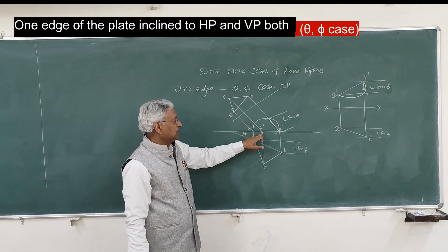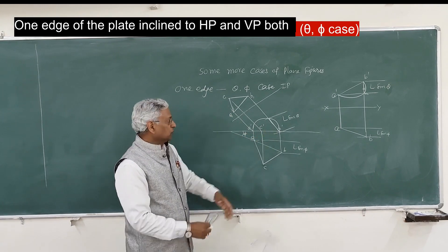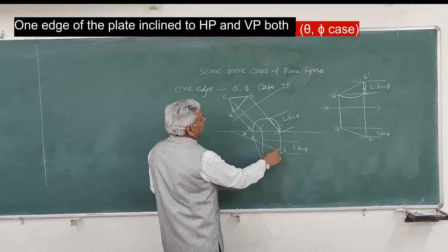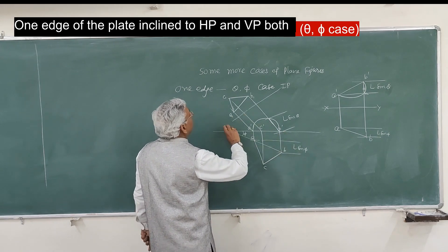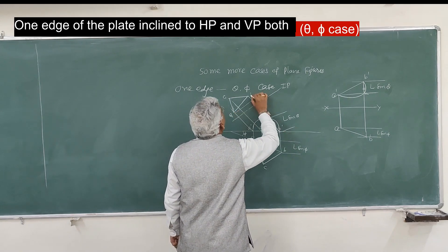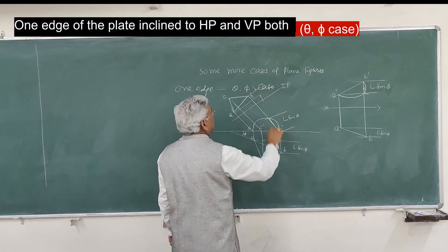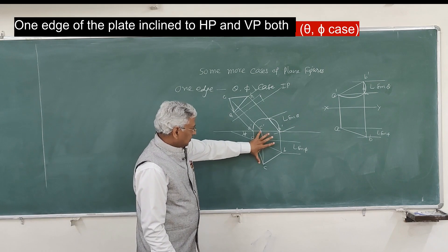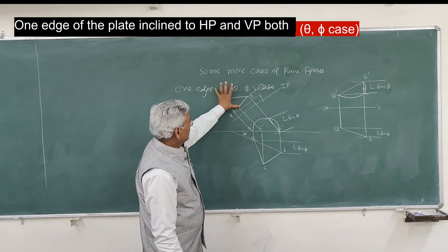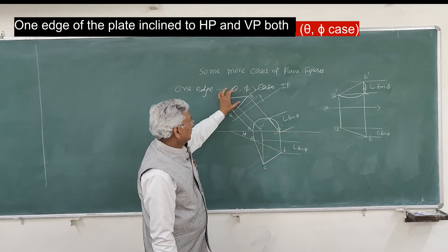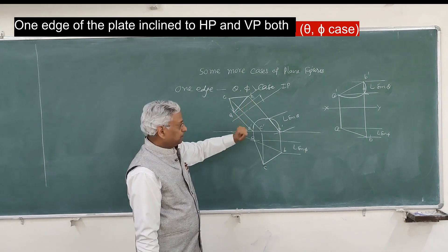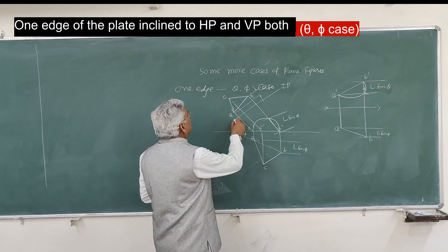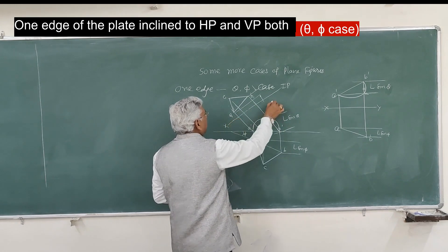The elevation is A', C', B'. Because you are using the same distances, the plan difference between A and B — L·sin(phi) — is maintained here as well. C is here and B is here, so this difference is preserved.